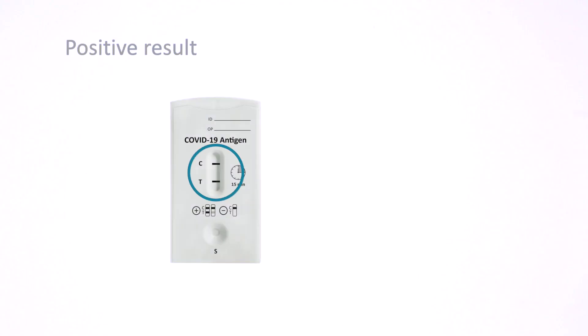Two lines, one in the control line region and another one in the test line region, indicate a positive result.